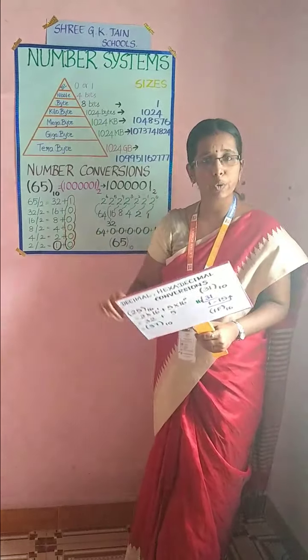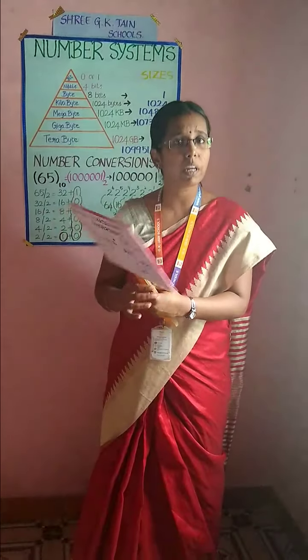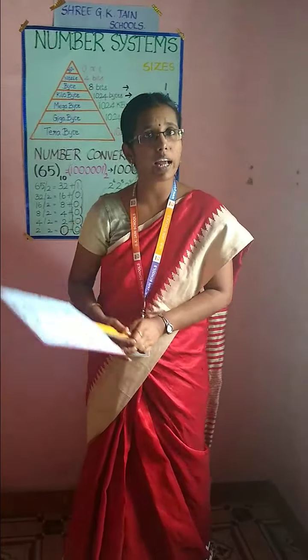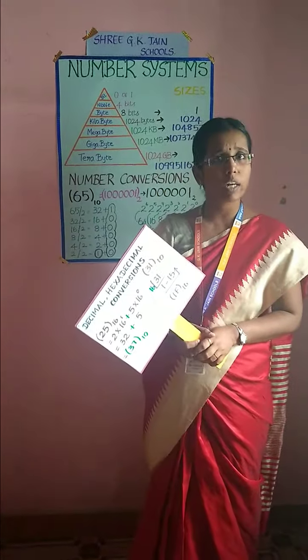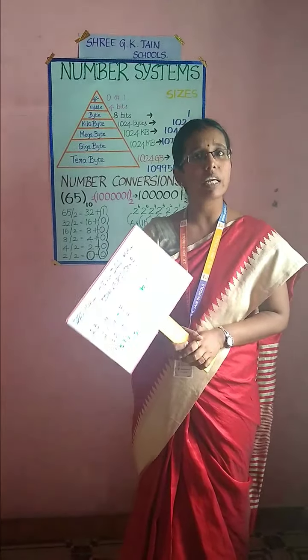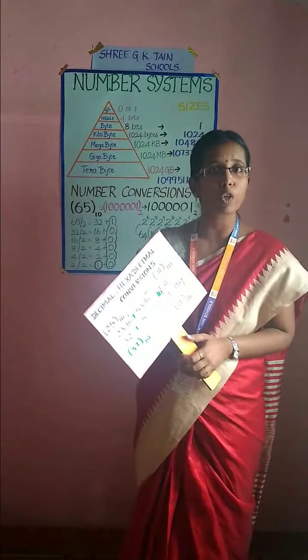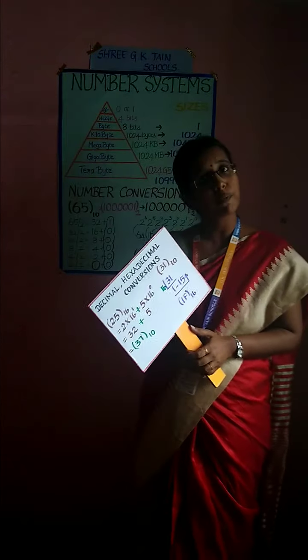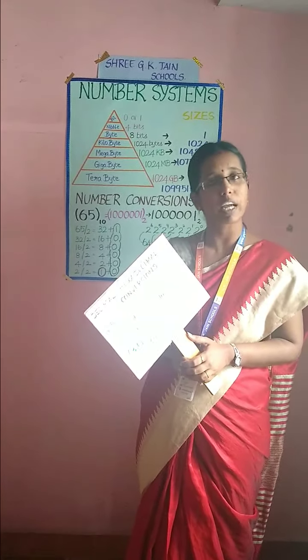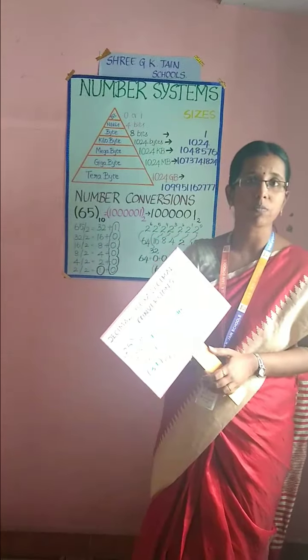So students, today we discussed about number systems. We practiced three conversion types: decimal to binary and binary to decimal, hexadecimal and decimal, and octal and decimal. I hope you enjoyed the class today. We have further problems in Chapter 2 and I will explain those in my next video. Thank you so much.